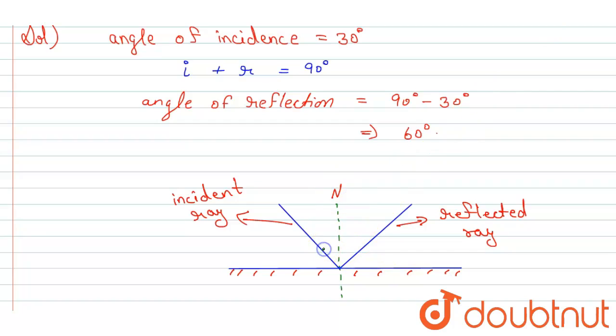So now this angle is 30 degrees, the angle of incidence, and this angle is 60 degrees. And the sum of these angles is 90 degrees.